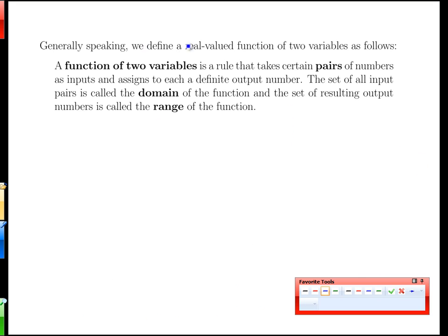What that means is we can define a real-valued function, so these are our temperatures, as a function of two variables. It's a rule that takes a pair of numbers, x and y in this case, and assigns them a single output number. The set of valid x and y-coordinates, x-y pairs, is the domain, and the set of resulting output numbers is the range. We have the same terminology we had with one variable functions, but the domain will get more interesting when we have pairs of values in our inputs.